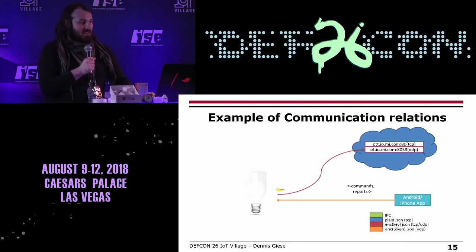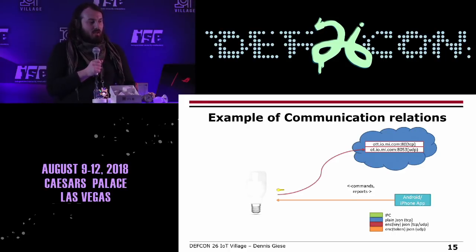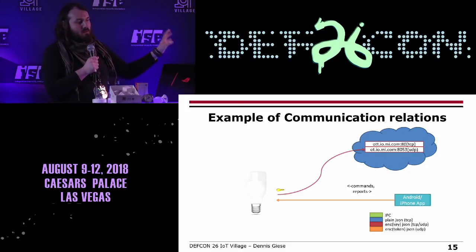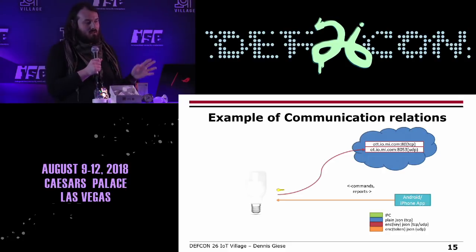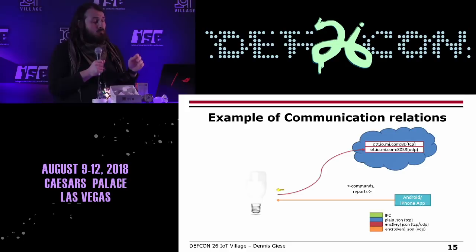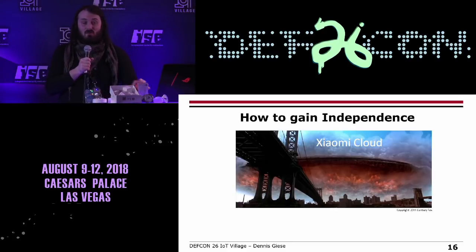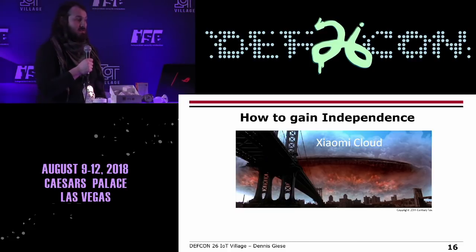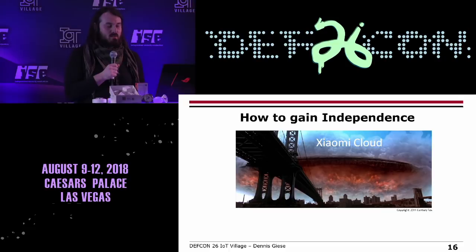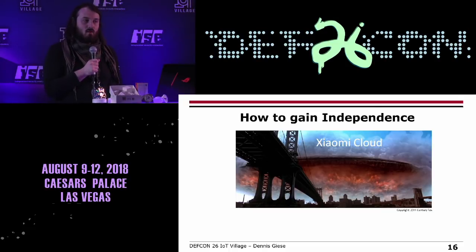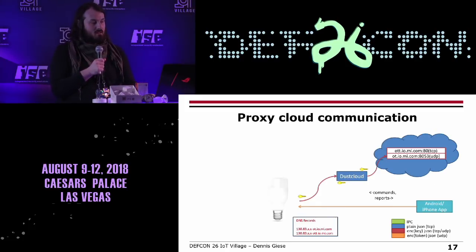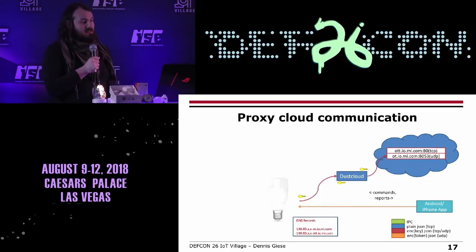Here's an example communication relationship between the light bulb and the cloud. The light bulb connects directly to the cloud with encrypted traffic, but you can also connect through your smartphone. The keys differ depending on the communication path.